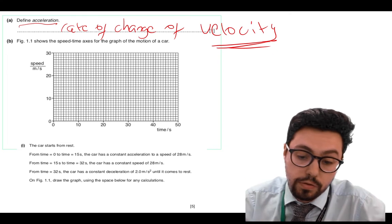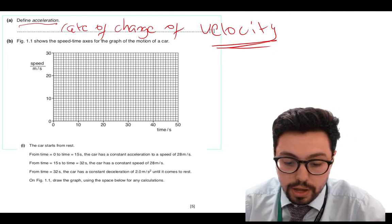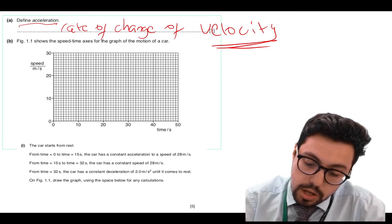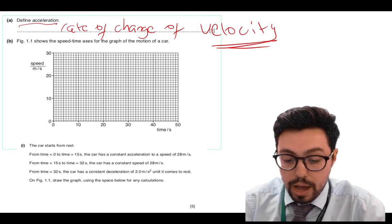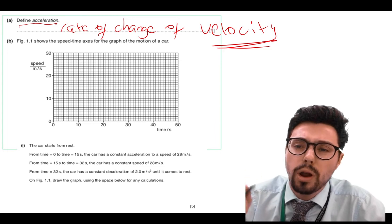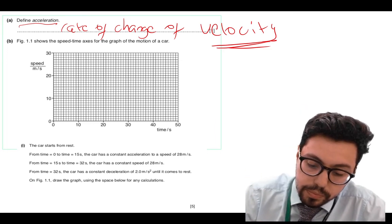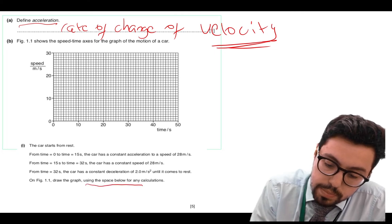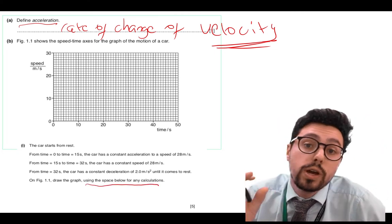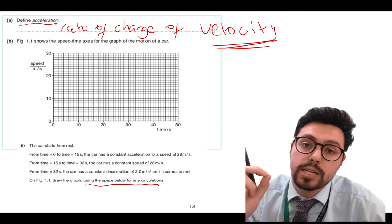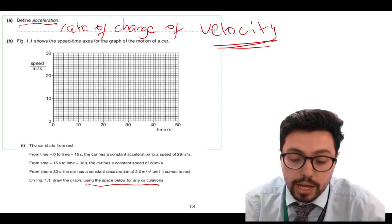For the second part, you're moving on from the simple definition. The second part is plotting this graph. They give us three steps for the graph and I want us to plot them out one at a time. An important note: at the bottom it says 'using the space below for any calculations.' It's really important you actually use that space because there will be working marks awarded for that.